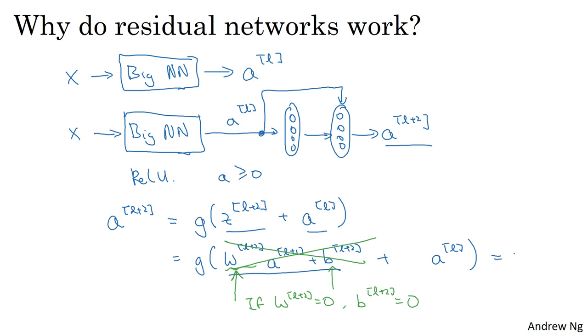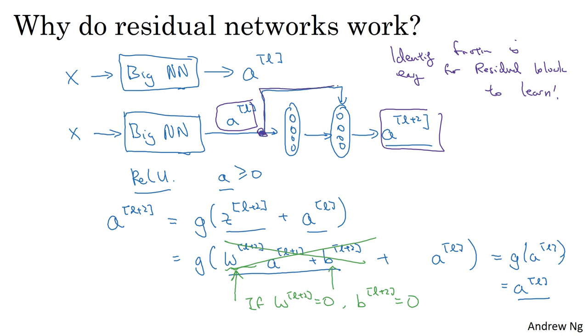Because we assumed we're using the ReLU activation function. And so all the activations are non-negative. And so G of AL is the ReLU applied to a non-negative quantity. So you just get back AL. So what this shows is that the identity function is easy for residual block to learn. And it's easy to get AL plus two equal to AL because of this skip connection.